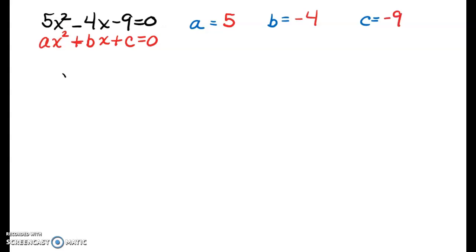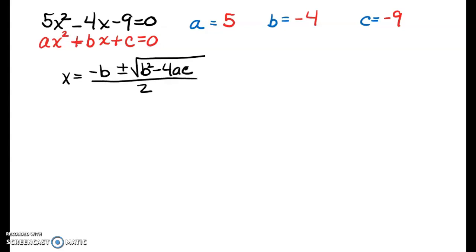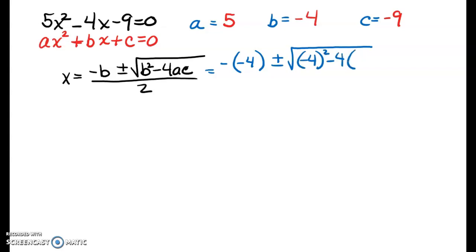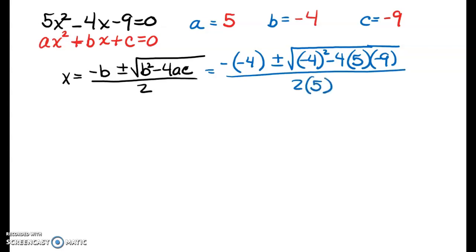The quadratic formula — I hope you've been practicing this — is negative B plus or minus the square root of B squared minus 4AC all over 2A. When we substitute our values in, we should use parentheses. So B is negative 4, plus or minus the square root of negative 4 squared minus 4 times 5 times negative 9, all over 2 times 5.